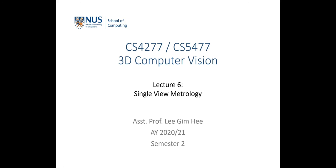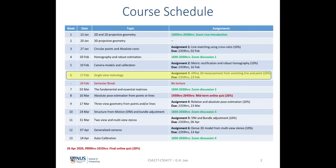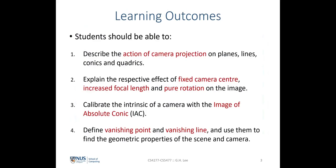Welcome to the lecture on 3D computer vision. Today we are going to talk about single view metrology. By the end of today's lecture you'll be able to describe the action of camera projection on planes, lines, conics, and quadrics. You'll also be able to explain the effects of fixed camera center, increased focal length, and pure rotation on the image, and how to calibrate camera intrinsics using the image of absolute conics. Finally, we'll look at vanishing points and vanishing lines and use them to find geometric properties of the scene and camera.